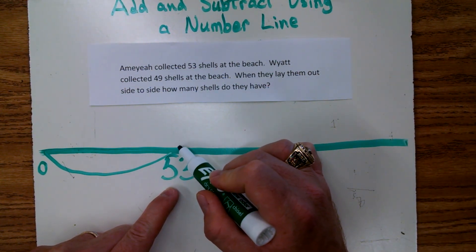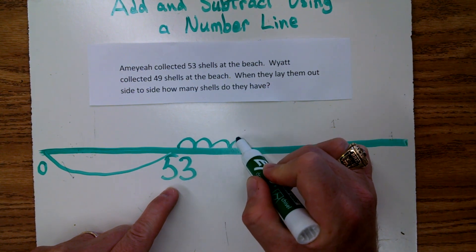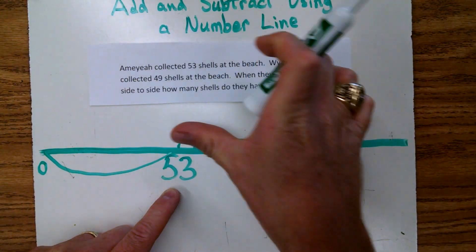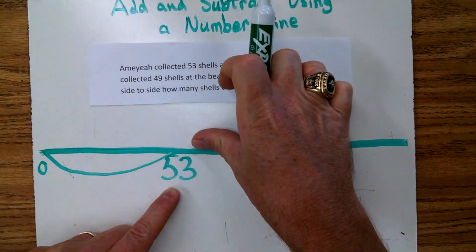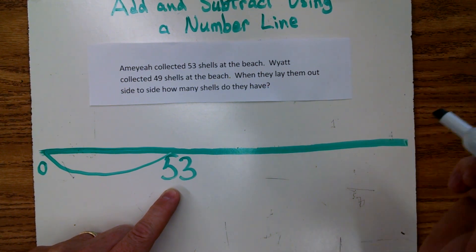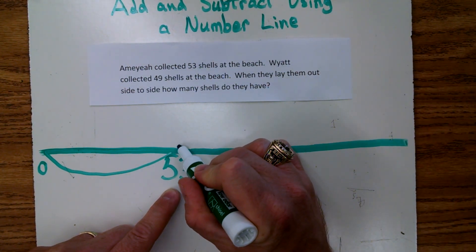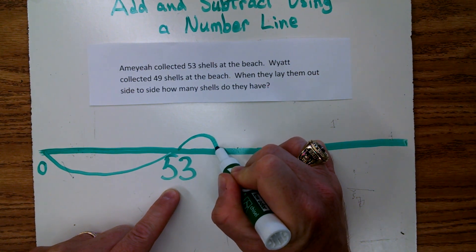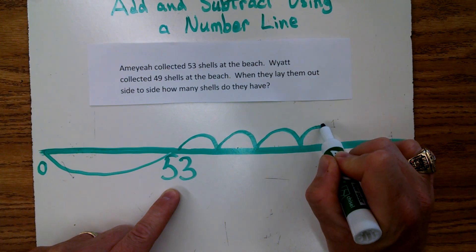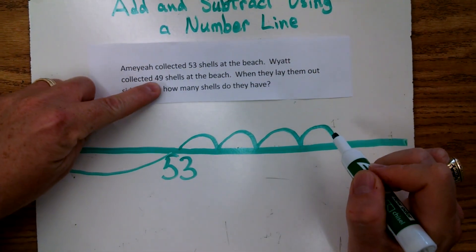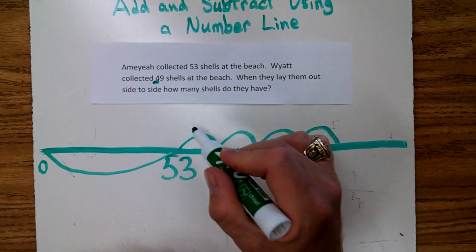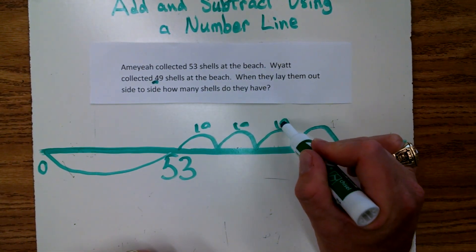We could sit here and count by ones — 1, 2, 3, 4, 5, 6 — but that's going to take all day. A faster way would be to start counting up by tens. So let's go 10, 20, 30, 40. Now we have our four tens counted up. Let's mark that right here so we remember we counted by tens.